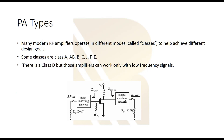RF power amplifiers operate in different modes called classes: Class A, AB, B, and C are linear power amplifiers but suffer from low efficiency. For high efficiency, Class E and F are the best choices — these are switched power amplifiers that can achieve higher power efficiency. Each class is used for different goals: if linearity is required, use Class A or AB; if high efficiency is needed, use Class E or F.